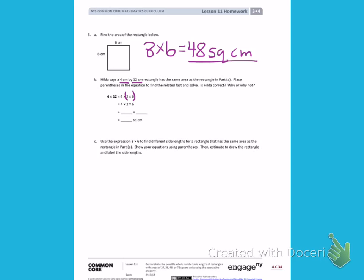In the next line, I want to move my parentheses. So this time I'm going to have 4 times 2 in parentheses. 4 times 2 is 8 with a 6 left over. That looks similar to Part A.